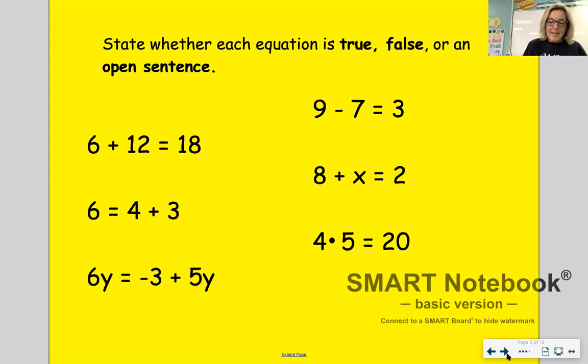So let's identify these equations by their type. The choices are it's either an open equation, an open sentence because it contains a variable. It's a true equation or it is a false equation.